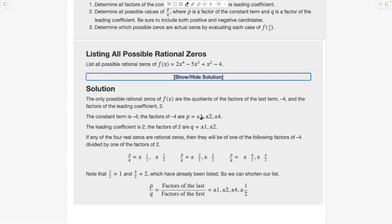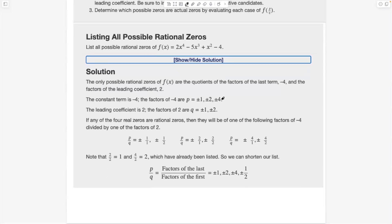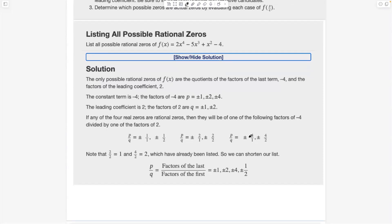All the factors of four are one, two, and four, plus or minus. All the factors of two, plus and minus one and two. So now I want to make every possible fraction I can, where I list one of these numbers on top and one of these on the bottom. So you can see here we get this big giant list. I could have four over two, four over one, plus or minus. Two over two, two over one. Well now we just got a repeat. Four over two and two over one, like you're going to get a lot of repeats. That's okay.